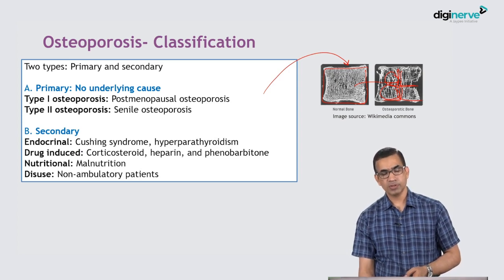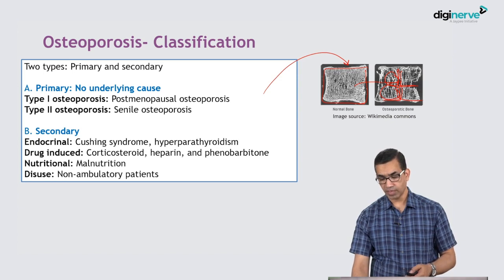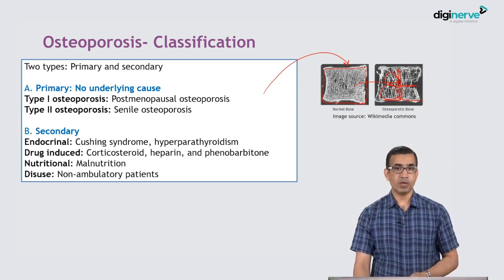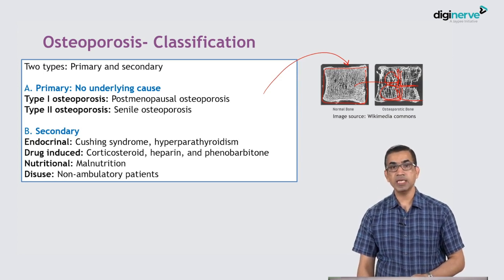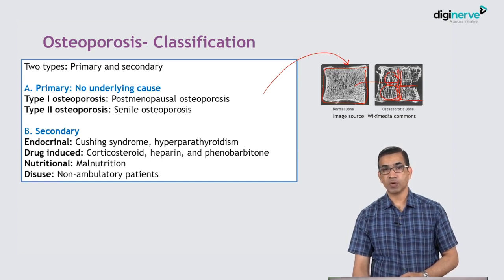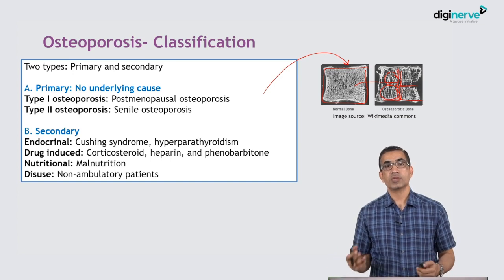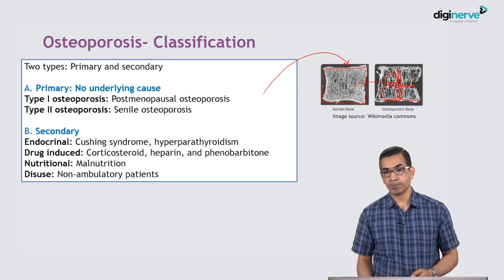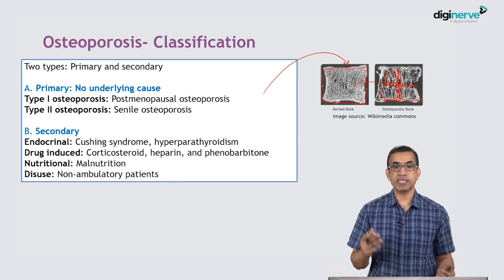Secondary osteoporosis can happen because of endocrine causes like Cushing syndrome and hyperparathyroidism, drug-induced causes like corticosteroids, nutritional deficiencies, or non-ambulatory patients who get disuse osteopenia. Paraplegia, quadriplegia — patients who just lie in bed and don't move around — develop disuse osteopenia. Even a fractured extremity not used for a few months gets disuse osteopenia.